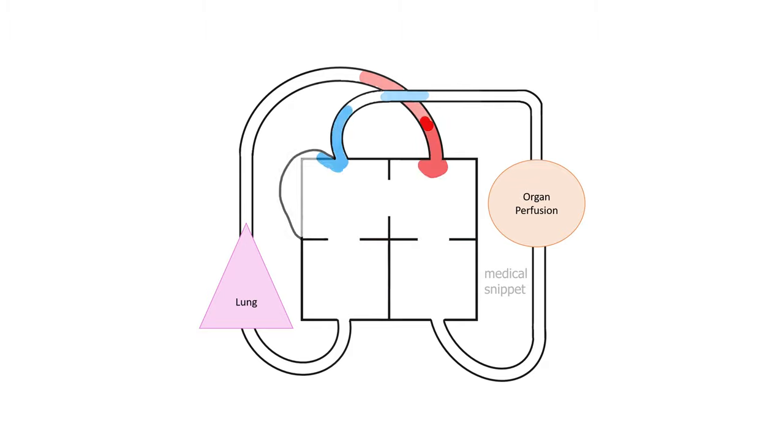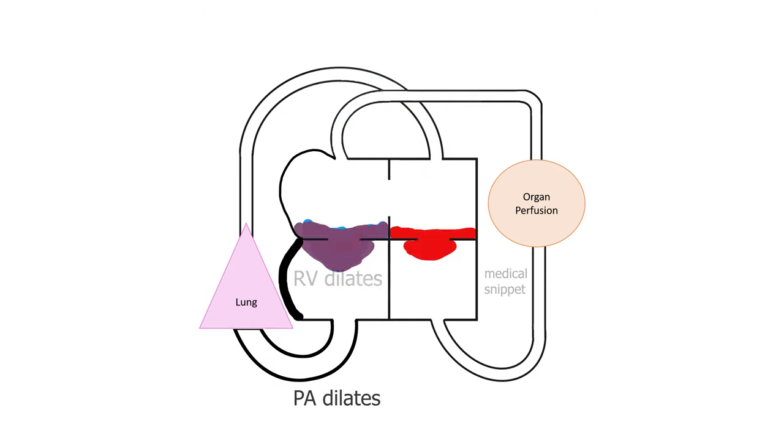As the right atrium is volume overloaded, it dilates. The same thing happens to the right ventricle and pulmonary artery. They dilate due to volume overload. Since there is decreased flow across the mitral valve, the left ventricle is normal or slightly decreased in size.